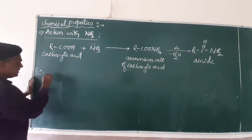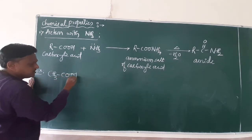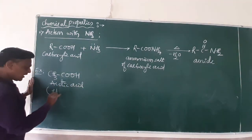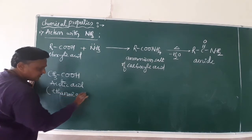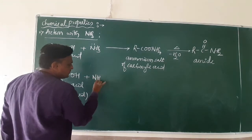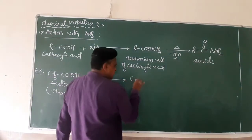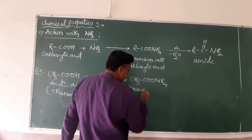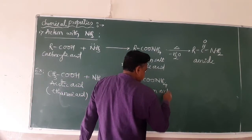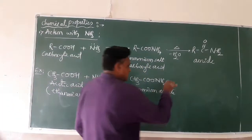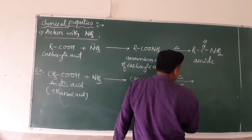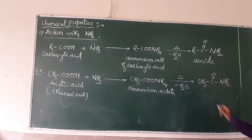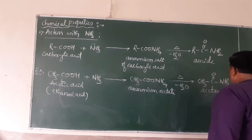For example, take acetic acid (CH₃COOH), also known by IUPAC name ethanoic acid. When it reacts with ammonia, the product is CH₃COONH₄, called ammonium acetate or ammonium ethanoate. Upon loss of water, it forms CH₃CONH₂, which is acetamide or ethanamide.